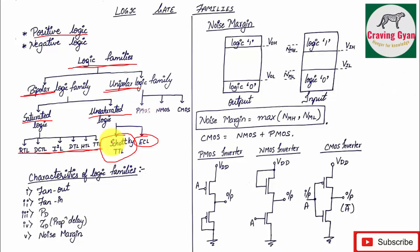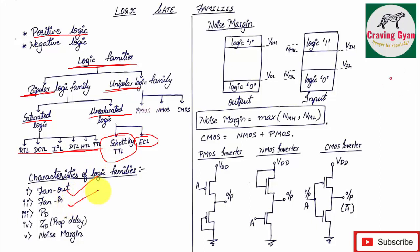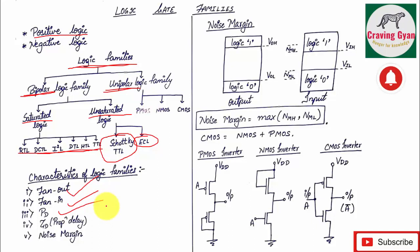When talking about characteristics of a logic family, you need to discuss fan-out, fan-in, power dissipation — which has two variants: static power dissipation and dynamic power dissipation — propagation delay (Tpd), and noise margin.